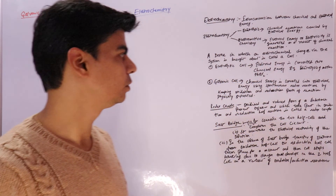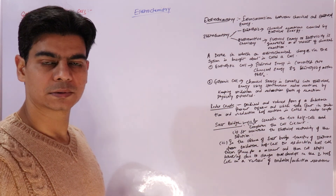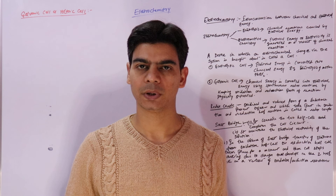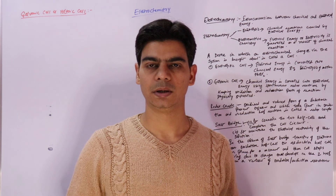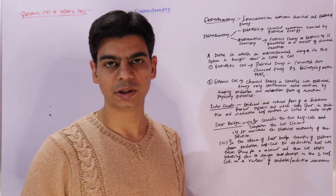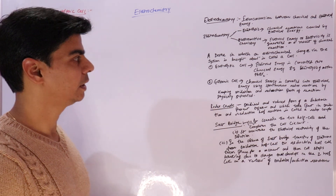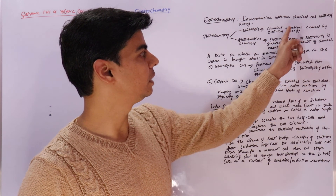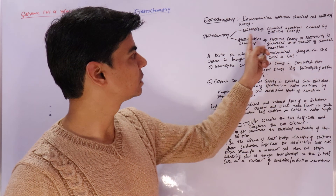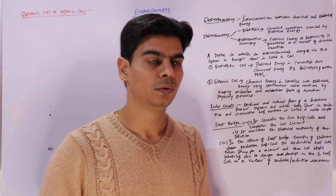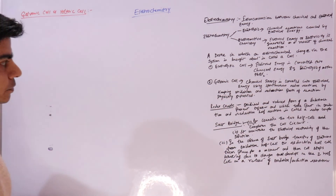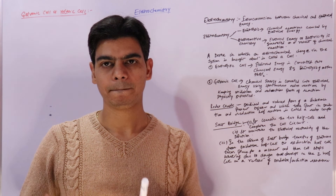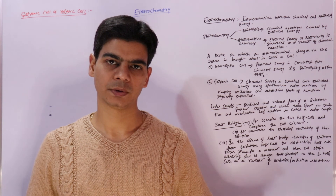In this video lecture we will study in detail those reactions which result in electric current — those chemical reactions that can produce electric current, or where chemical energy is converted into electrical energy. In the previous video lecture we were already introduced to electrochemistry and the two types of reactions: electromotive chemistry, where chemical energy is converted into electrical energy, and electrolysis, where electrical energy is converted into chemical energy. Spontaneous reactions are used to convert chemical energy into electrical energy.